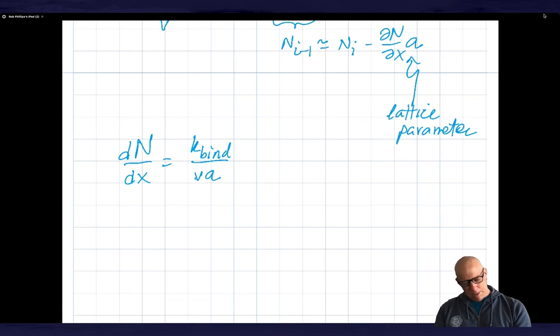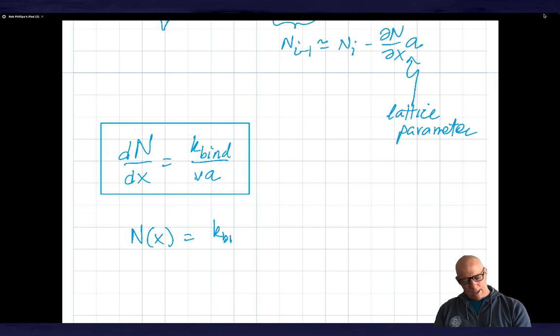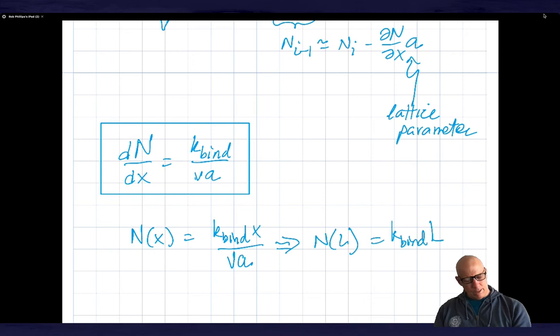So this tells me, you know, so this basically is a differential equation for the number of motors as a function of position. And we can straightforwardly solve that as n of x is equal to k_bind times x over v a. And this tells me, or implies, that the number at the end is equal to k_bind times L over v a.